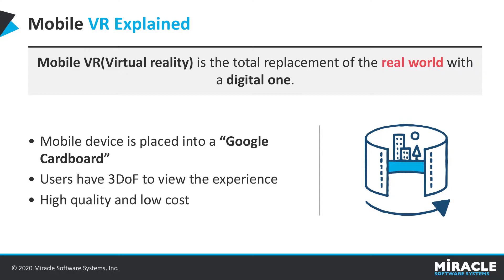In order to do mobile VR, you'll need two things: a mobile device running Android 5.0 or iOS 11, and then a viewer, which could simply be a cardboard cutout or a solid plastic head-mounted display. Mobile VR offers three degrees of freedom, which is similar to the 360 style, where you get just rotation, so it'll track where you're looking in any direction.